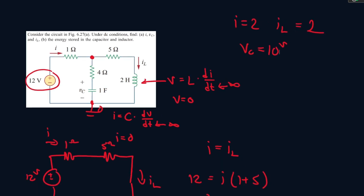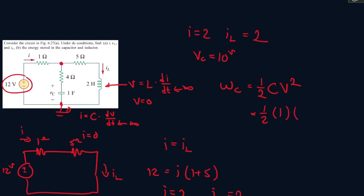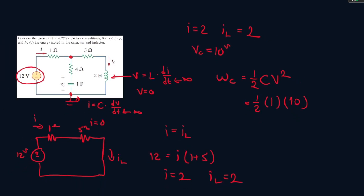We need to find the energy stored in the capacitor and the inductor. So for energy stored in the capacitor, it's equal to 1 over 2 times the capacitor value times the voltage squared. So the capacitor value is 1, and the voltage value, it was 10 squared. So 10 times the power of 2, that's 100, divided by 2, that's 50 joules.